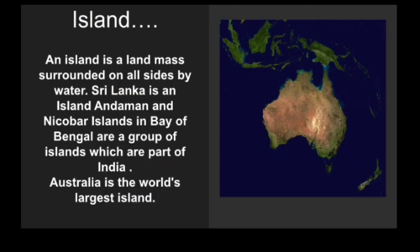Now we will see what an island is. Our last feature we are going to study today is the island. An island is a landmass surrounded on all sides by water — meaning all four sides are covered with water. This is the difference from a peninsula, which is surrounded by water on only three sides. A landmass that is completely surrounded by water on all four of its sides is called an island.